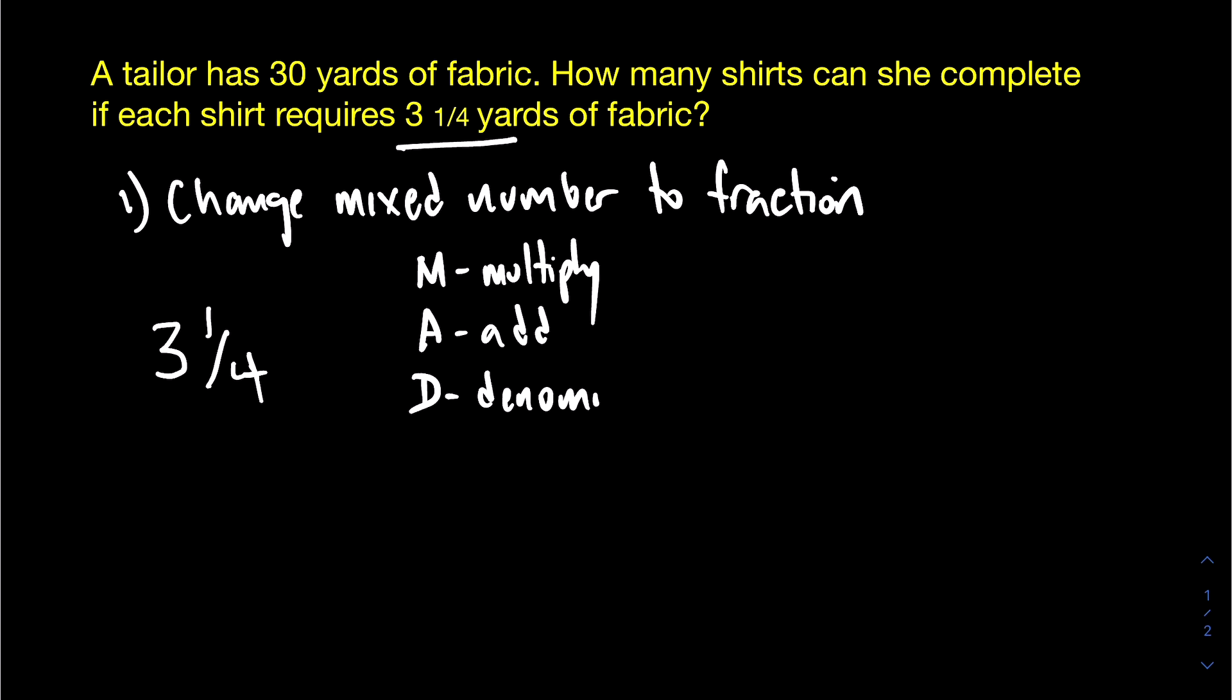Alright, so what are we going to multiply? Well, we're going to multiply the whole number, the three, by the denominator, the four. So that's step one, the M of MAD. So three times four gives us twelve.